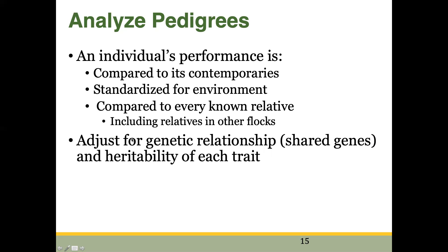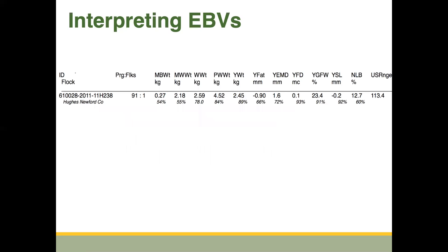Then we're going to account for things like genetic relationships and genetic correlations and antagonisms, heritabilities of traits, and all sorts of different things that go into these genetic calculations. At the end of the day what we're left with is a panel of estimated breeding values. Here we have an individual ram and here's a panel of estimated breeding values — or genetic potentials — for that animal.